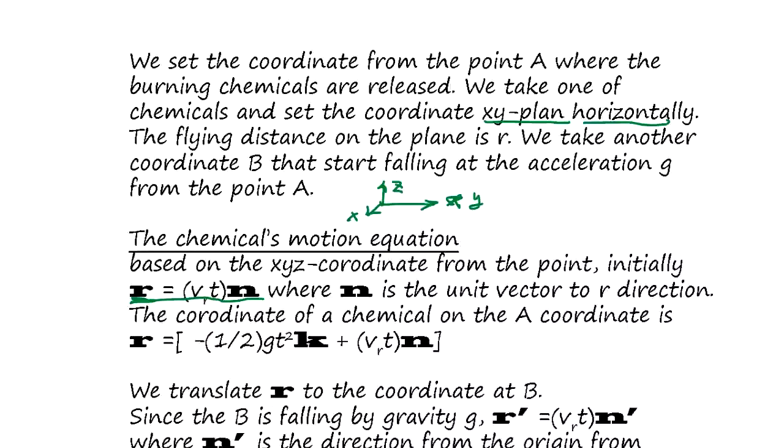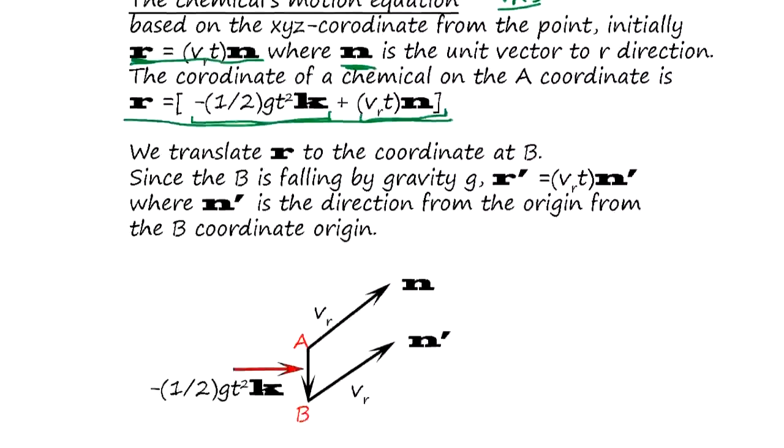If Vr is constant, if not constant it's a time function times n. N is the radiating direction from the origin. So the position will be the gravity falling effect plus initial speed.